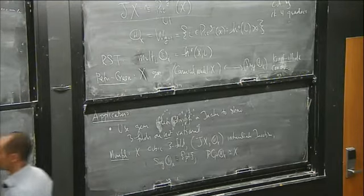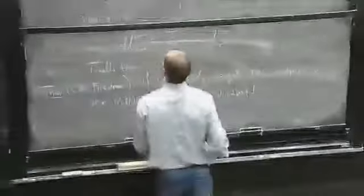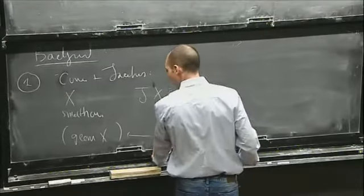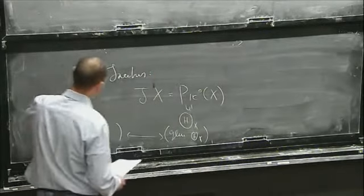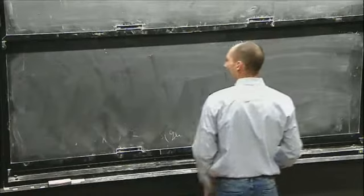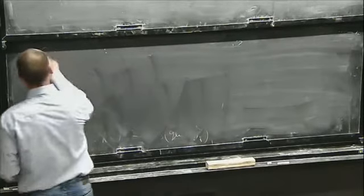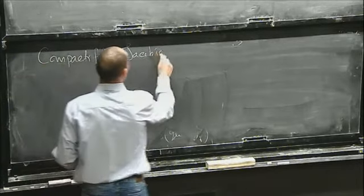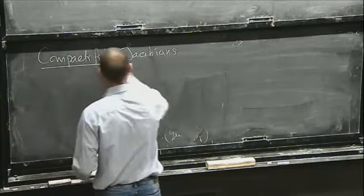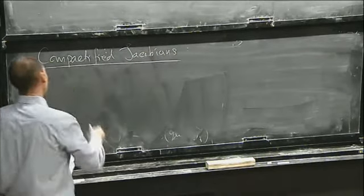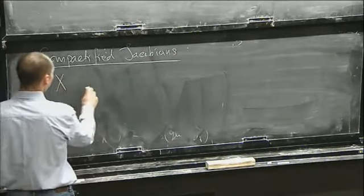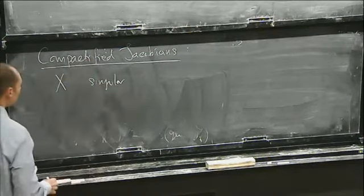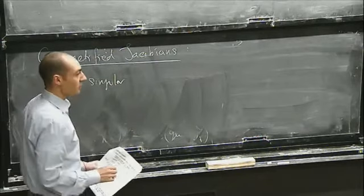So this is some background on the theory of Jacobians. Let me now remind you of compactified Jacobians. For today, most of my curves X will be singular curves — reduced, for the most part connected, with locally planar singularities. Reasonably nice. But for the most part, just think stable curves.